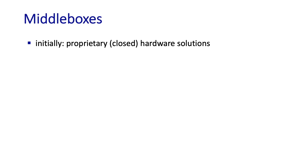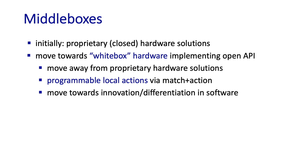The proliferation of middleboxes in networks started about 10 years ago. Initially, these middleboxes were proprietary with closed hardware and software — you'd buy a proprietary middlebox just like you'd buy a proprietary router. More recently, there's been a move towards what's known as white box hardware, which can be programmed and specialized via an API like flow tables in OpenFlow by the owner-operator. The software then implements specific middlebox functionality on top of this generic white box hardware.